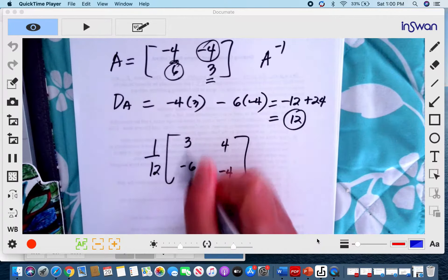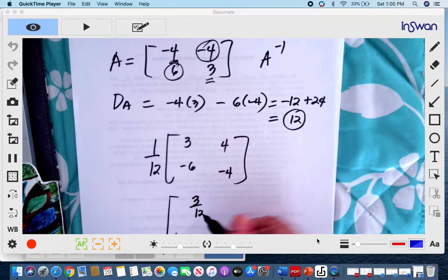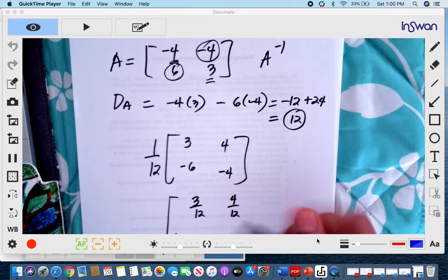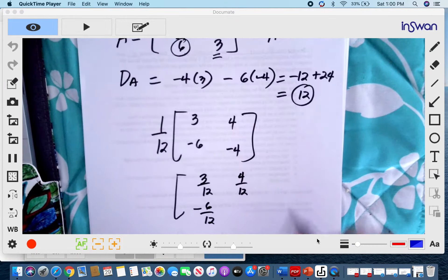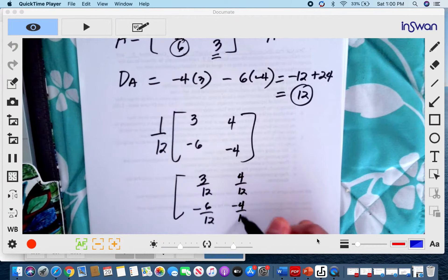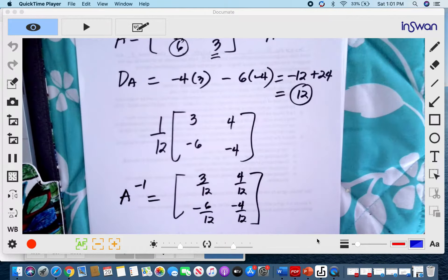So that's 1/12 times 3, that's 3/12. 4 times 1/12 is 4/12. And -6 times 1/12 is -6/12. So this is now our inverse matrix.